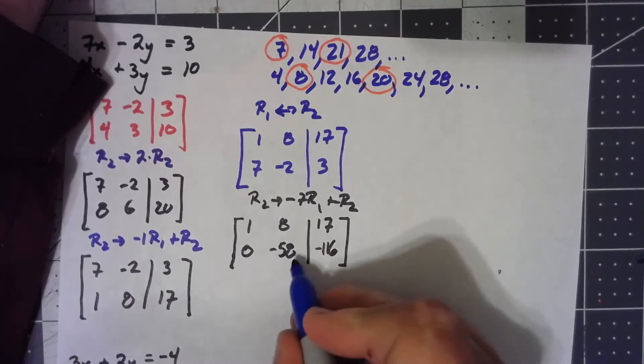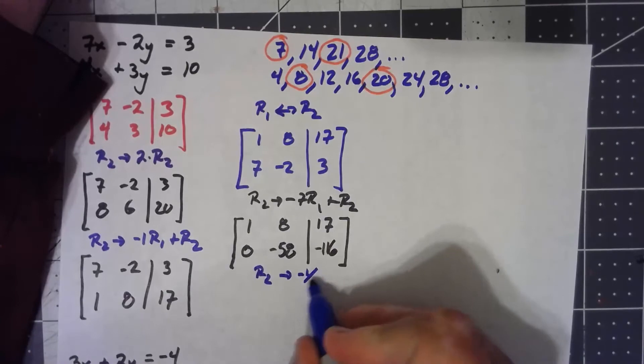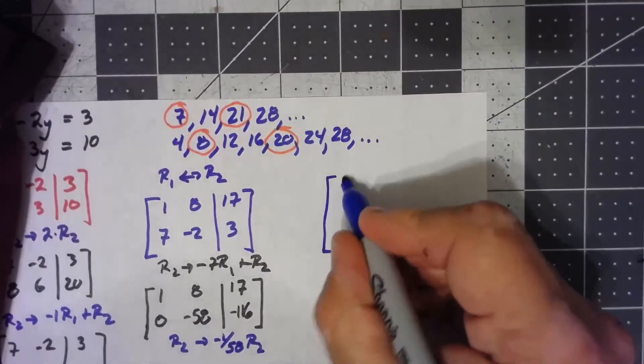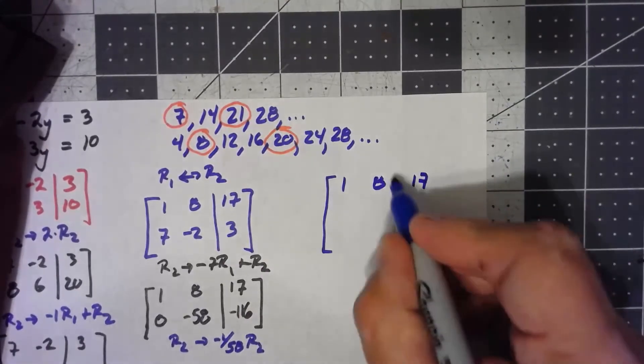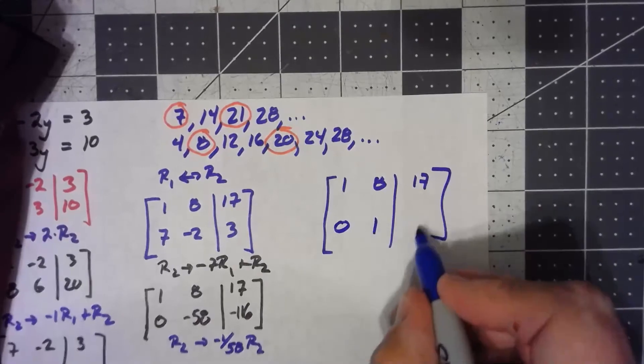Because the next step is to get a 1 right there. So row 2 becomes negative 1/58th row 2. I get the 1, 8, 17, and I get 0, 1, 2.